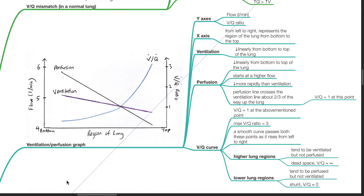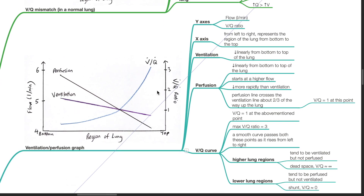On the ventilation perfusion graph, the y-axis consists of flow in liters per minute and the VQ ratio. The x-axis from left to right represents the region of the lung from bottom to the top. Ventilation decreases linearly from bottom to top of the lung. Perfusion also decreases linearly from bottom to top, starting at a higher flow and decreasing more rapidly than ventilation. The perfusion line crosses the ventilation line about two-thirds of the way up the lung, where the VQ ratio equals 1.